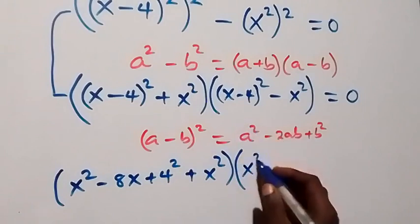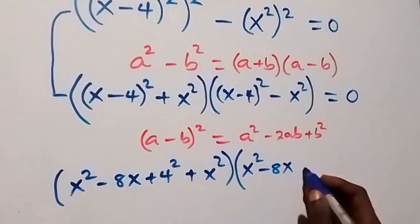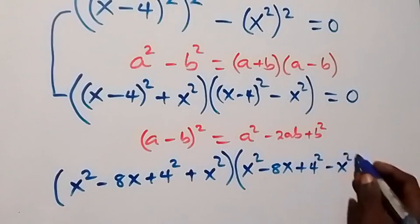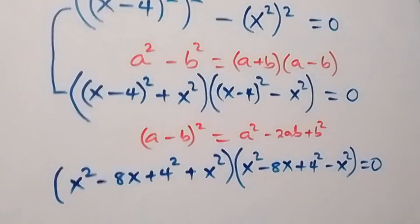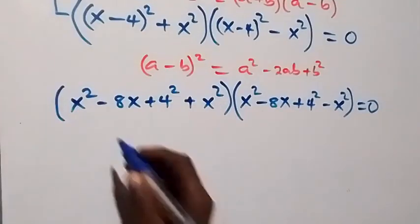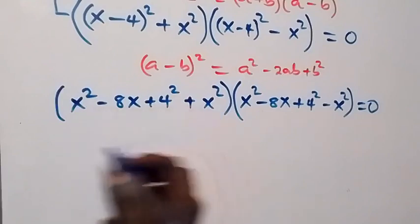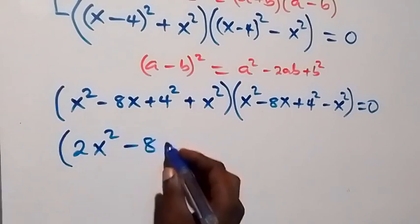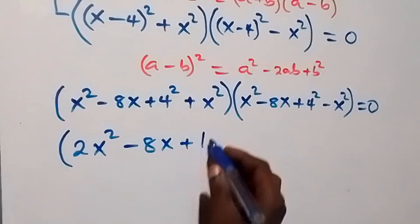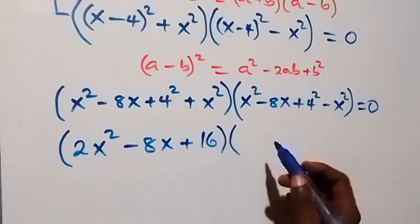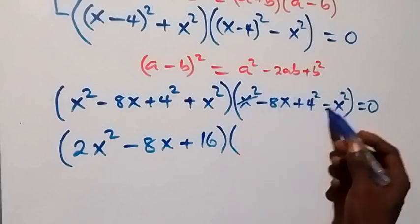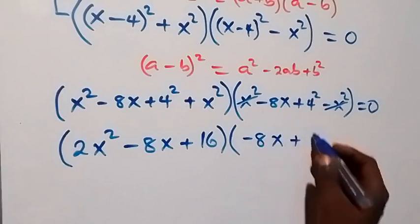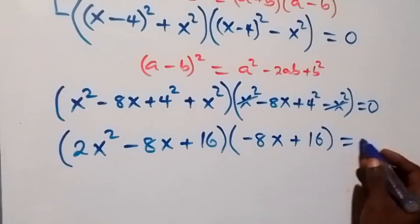This gives us x squared minus 8x plus 4 squared, which is 16. Then in the second bracket, x squared minus x squared cancels out, and we have minus 8x plus 16 equals to 0.